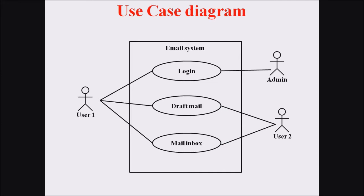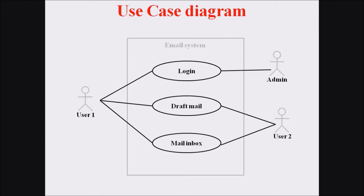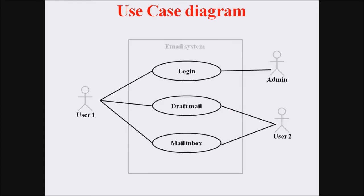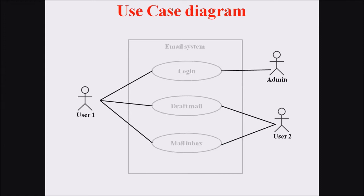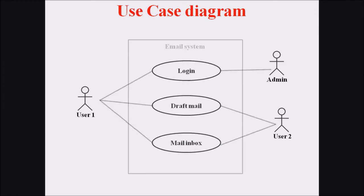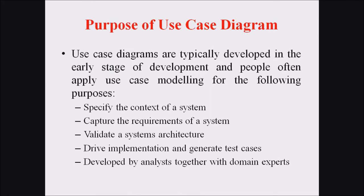Here we can see three different actors: user 1, user 2, and admin. There are three different processes enclosed in an ellipse: login, draft mail, and mail inbox. The system associated is the email system. The actors are user 1, user 2, and admin. The processes are login, draft mail, and mail inbox, and the relationships are between the actors and the different processes.